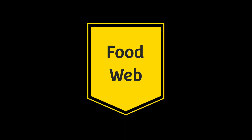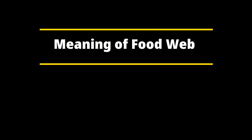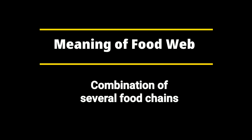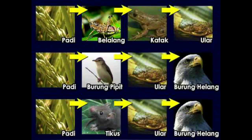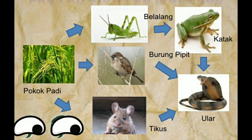Hi everyone, let's learn about Food Web. What is the meaning of Food Web? A Food Web is a combination of several food chains. Look at these food chains — there are three food chains in a habitat at the paddy field. When all the food chains in a habitat are combined, it will form a food web.